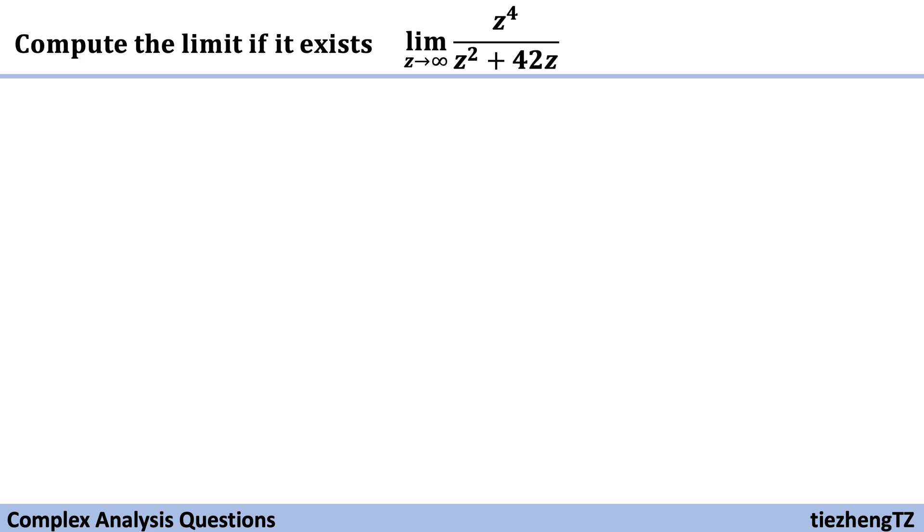This question is to compute the limit, if it exists, of Z to the power of 4 over Z squared plus 42Z when Z approaches infinity. First, when we look at this given function, when Z approaches infinity it seems both the numerator and denominator approach infinity. So infinite over infinite—it seems we cannot get a limit.